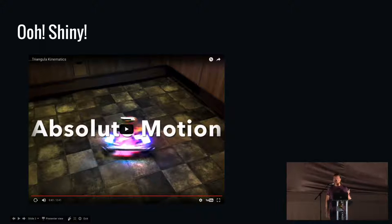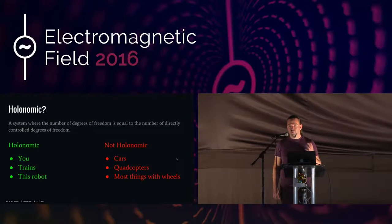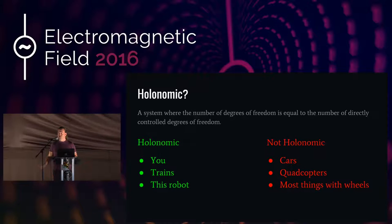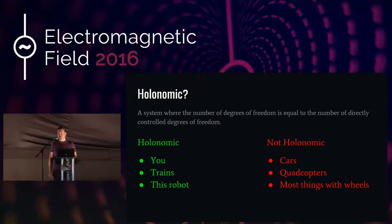The talk is about holonomic robots, so I should probably define what a holonomic system is. It's a system where the number of directly controllable degrees of freedom is equal to the number of degrees of freedom. When we're talking about degrees of freedom from a mechanical system, we're referring to the number of different ways it can move within its environment. When you're walking around, you can independently translate and rotate — you are holonomic. A train is holonomic because it has exactly one degree of freedom. And this robot is holonomic because it has three degrees of freedom: translation in two axes and rotation, all controlled independently.